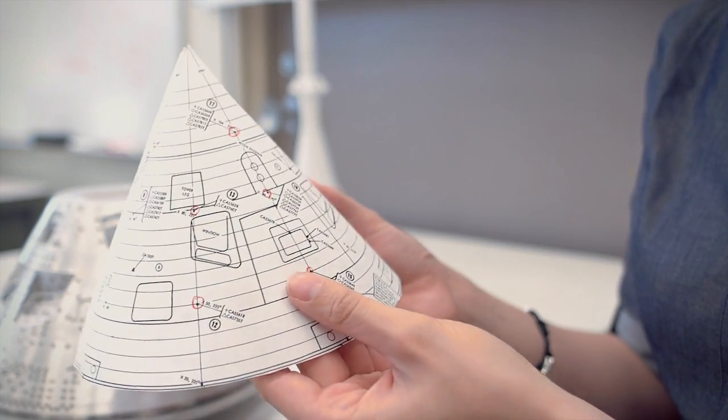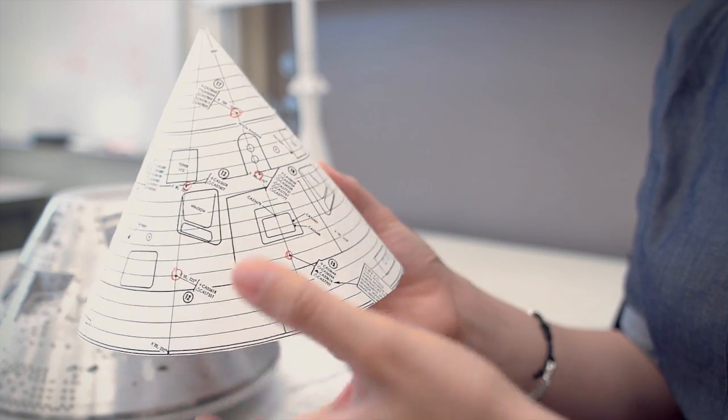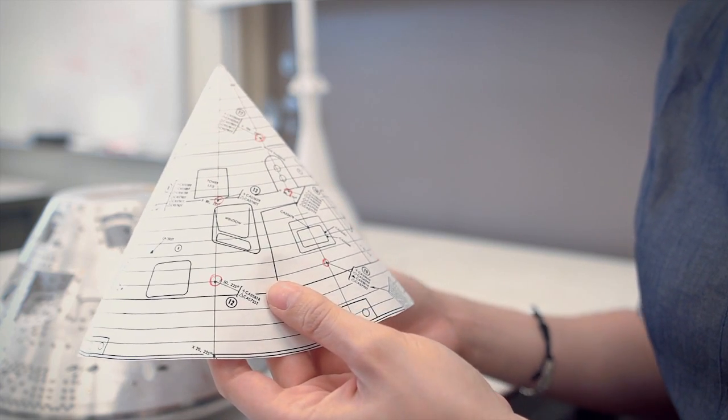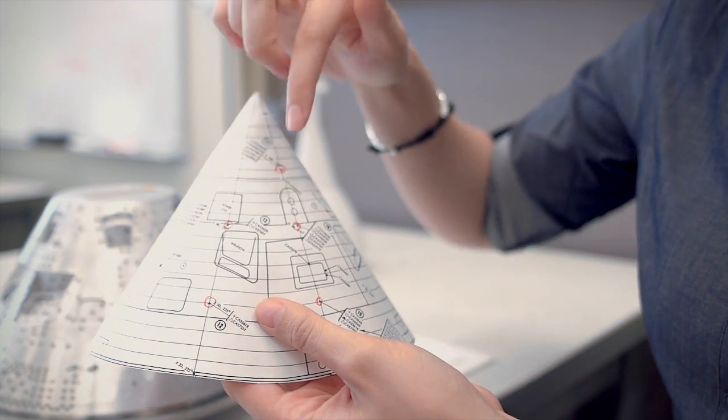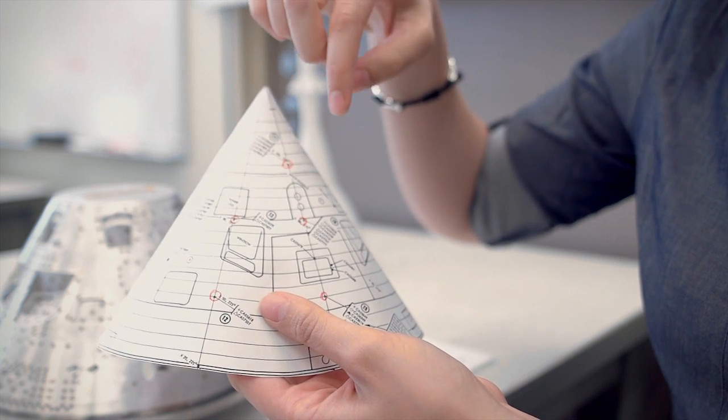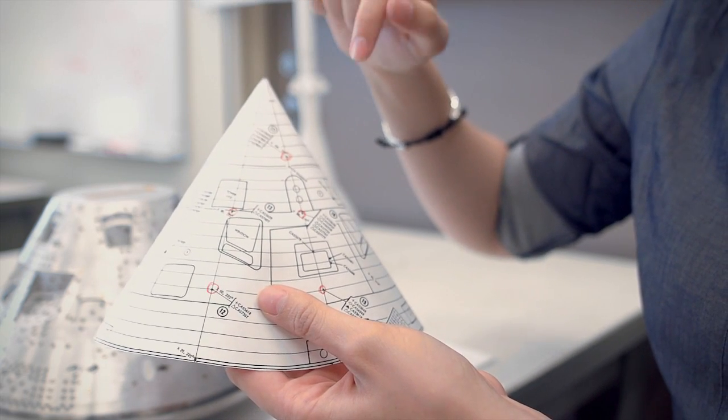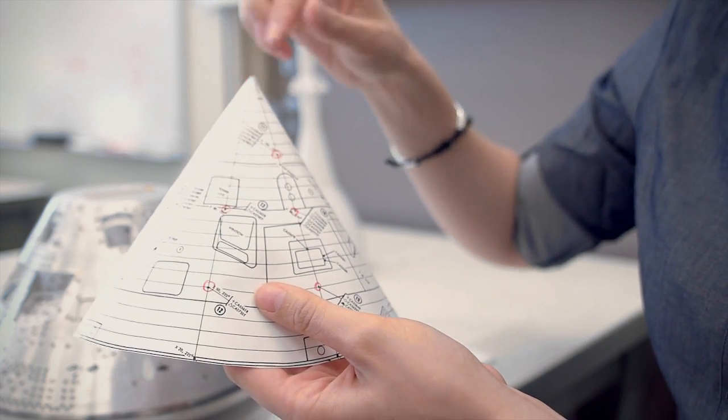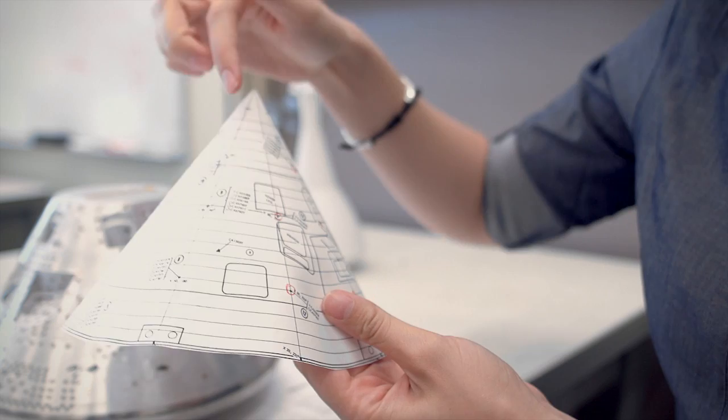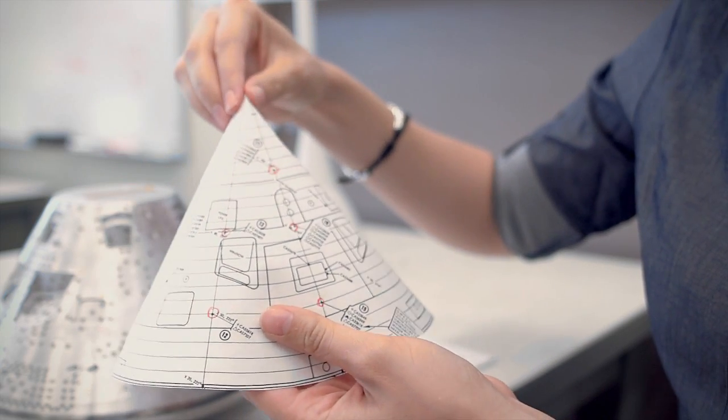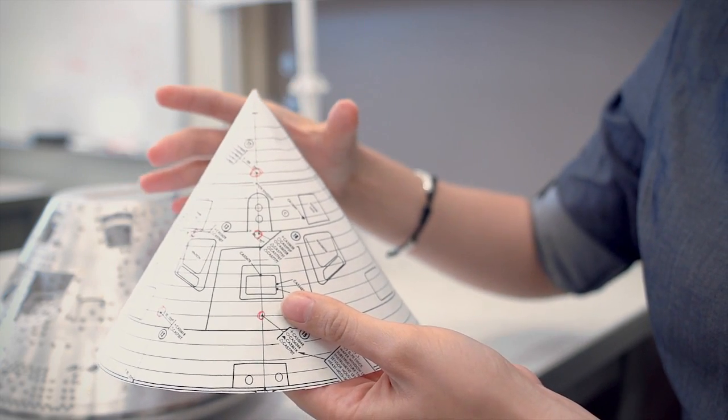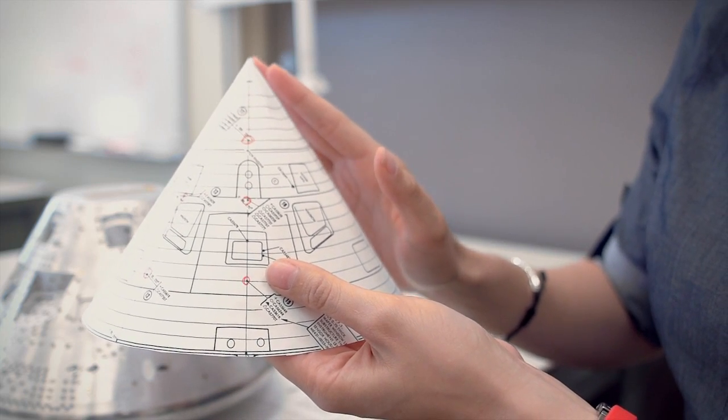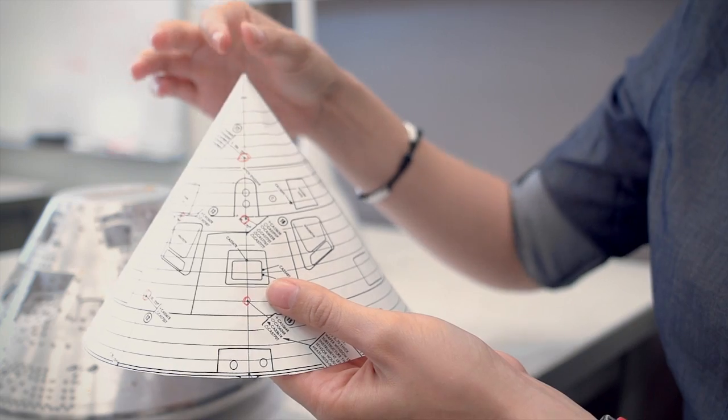So this paper right here that we have taped together into a cone is the actual shape of the Apollo vehicle. On the drawing here you can see that the different features on Apollo are called out such as the window, the launch escape tower, and we also have the instrumentation where they took flight measurements. Some of them are circled here in red but they're called out all around the vehicle. You can see that Apollo was a much different shape from Orion in the fact that this cone angle is at 33 degrees and we have a full cone with a tip on it.